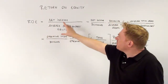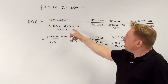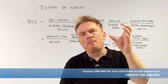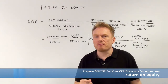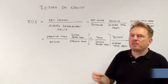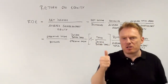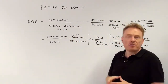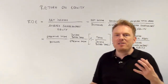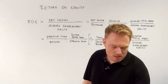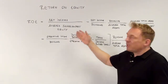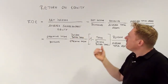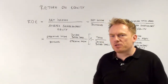The first one: return on equity equals net income divided by average shareholders' equity. Net income equals all revenues minus all relevant costs, including depreciation, and afterwards subtracting taxes. So after subtracting costs, depreciation, and taxes we get net income. Net income divided by average shareholders' equity equals return on equity, because net income is the income that belongs to equity, that belongs to shareholders. That's the first way to calculate return on equity.